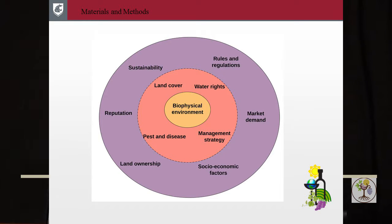The core of our model was the biophysical environment. We focused on climate, weather, soil, and topography. You can also add more layers later on — softer layers such as pests and diseases, land cover, water rights, management strategies, land ownership, sustainability, and so on. But for now, we focused on the biophysical environment, and we also included land cover and water rights because they are important for Washington State.